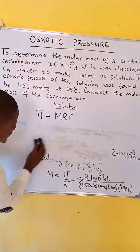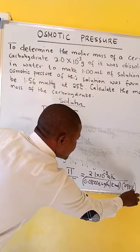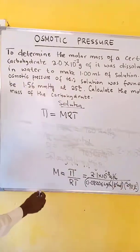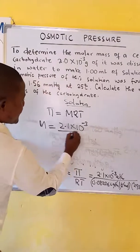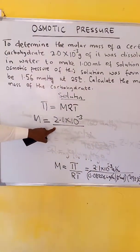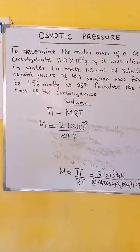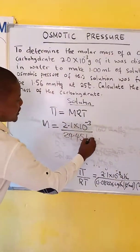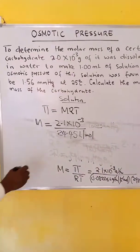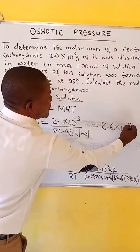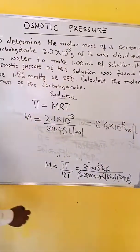The atmospheres cancel and the Kelvin cancel. We have M equal to 2.1 times 10 to the negative 3 over 24.45 liters per mole. When we divide, we get 8.6 times 10 to the power of negative 5 moles per liter. So this is our molarity.